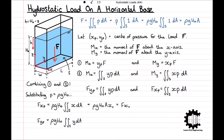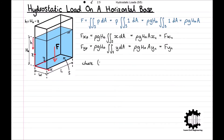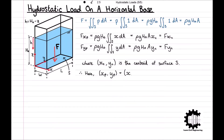Note that XC denotes the X coordinate of the centroid of the surface S. Carrying out the same process for the second equation, the surface integral of Y with respect to A equals A times YC, so F·YP equals rho·G·H0·A·YC, which equals F·YC. As stated, XC, YC is the centroid of the surface S. Therefore, it follows that in this case the centre of pressure (XP, YP) is equal to the centroid of the surface S, (XC, YC).